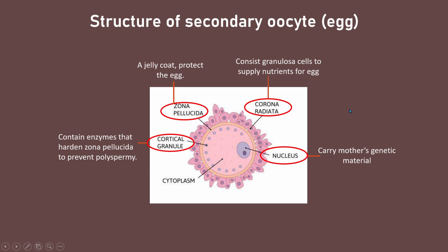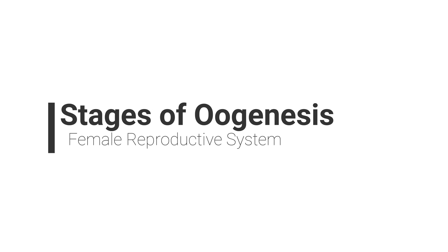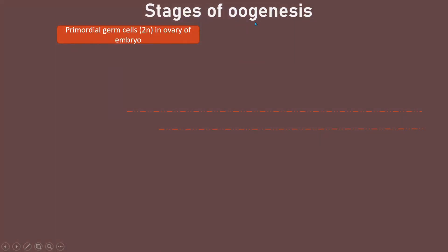So this is the structure of the secondary oocyte, the female gamete. The secondary oocyte is produced through a process known as oogenesis. Oogenesis is the process of producing the secondary oocyte in the ovary.